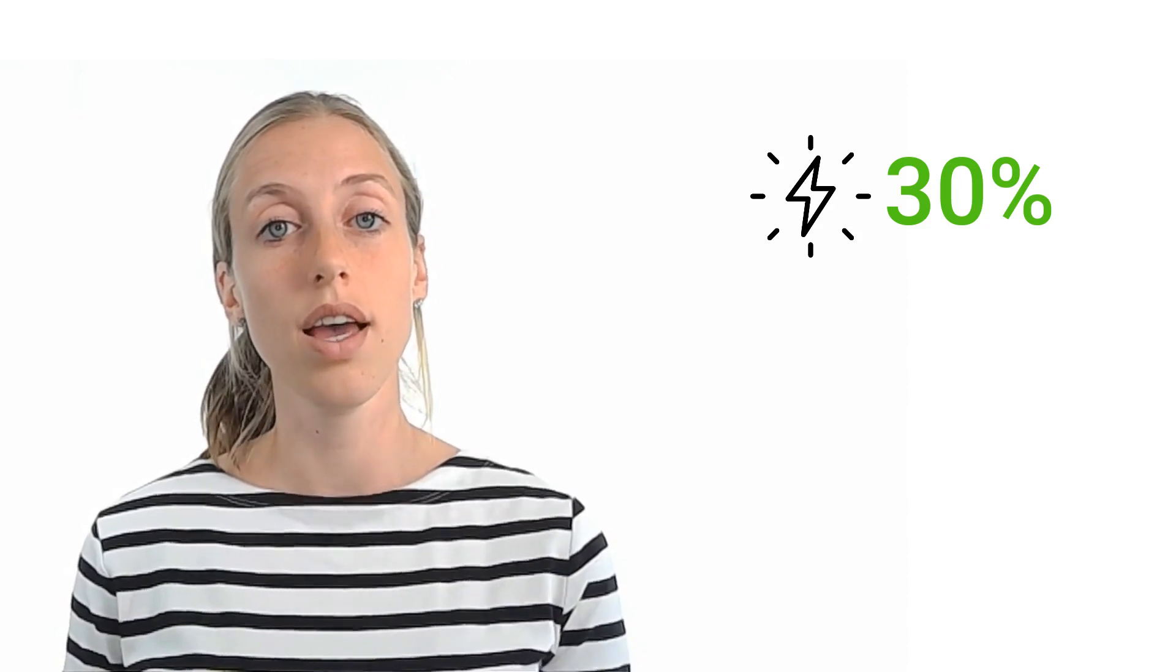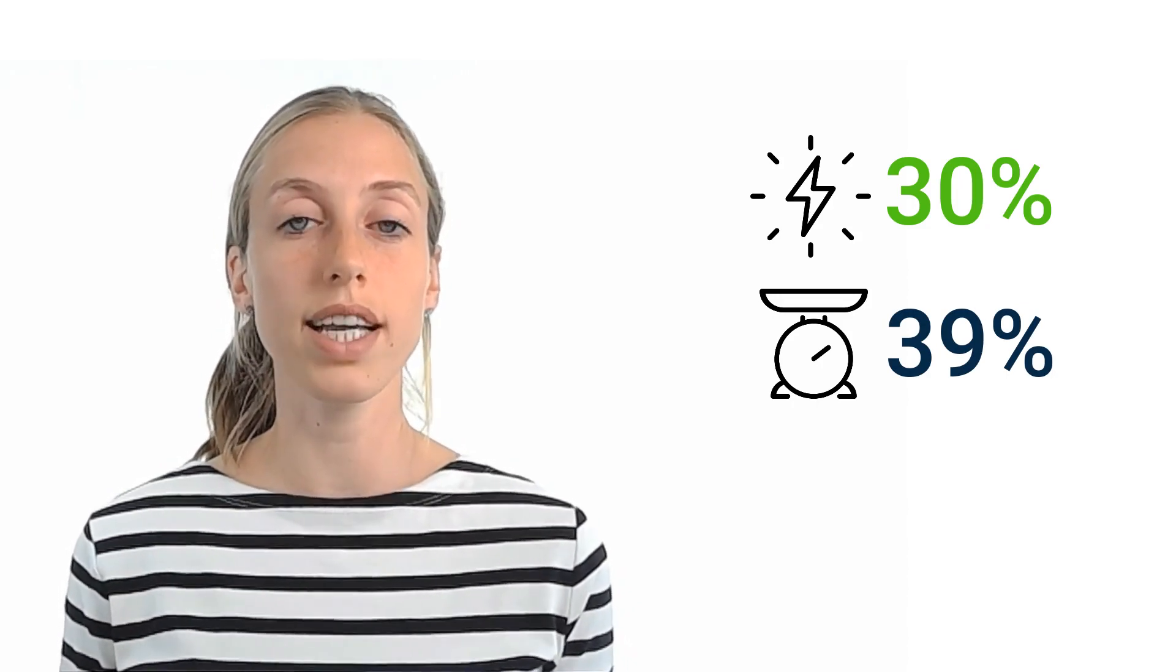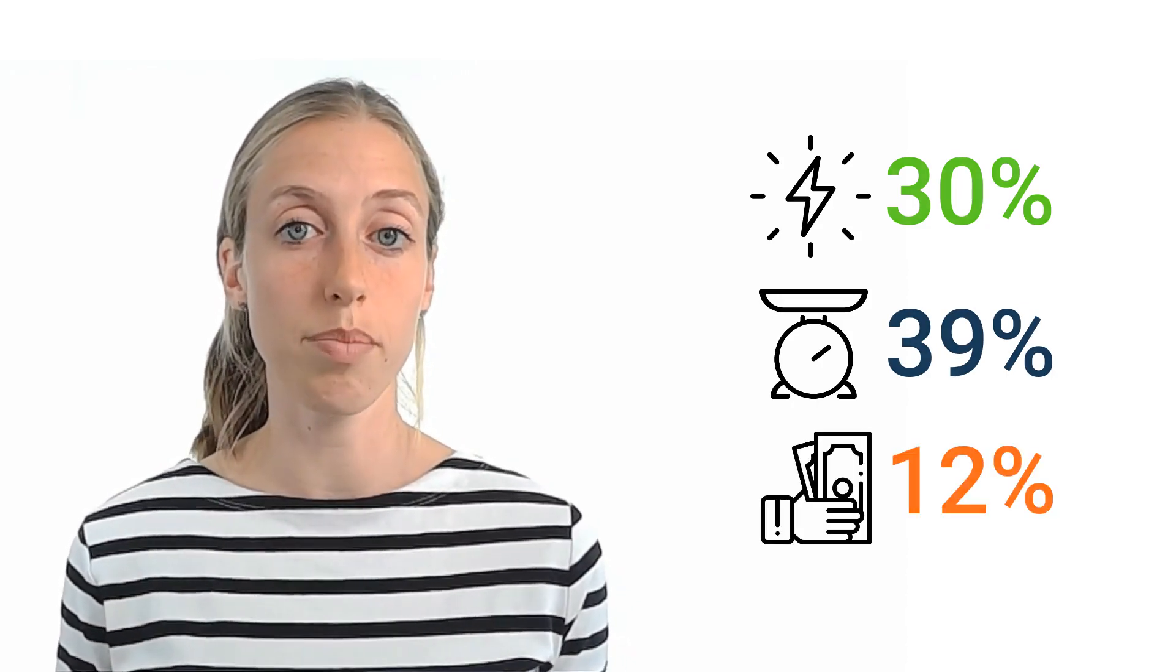So if I allocate based on time spent in the oven, the apple pie gets 30% of the impact. But if I allocate based on the weight of the pies, the apple pie gets 39% of the impact. And if I finally allocate based on economic value, the apple pie only gets 12% of the environmental impact.